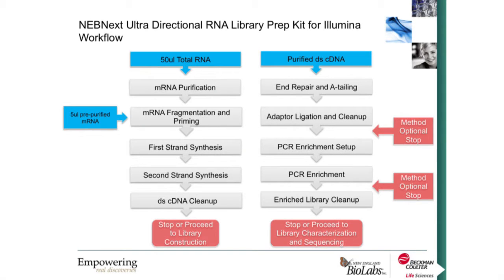This is a basic map of the workflow from an automation standpoint. The blue boxes indicate where your inputs are. On the left-hand side is the cDNA synthesis workflow, starting with either 50 microliters of total RNA going through mRNA purification using the poly-enrichment module from NEB, or 5 microliters of pre-purified mRNA or ribo-depleted RNA proceeding directly into mRNA fragmentation and priming. We then go through first and second-strand synthesis and double-stranded cDNA cleanup. A user can stop here or continue into the library construction workflow, starting with purified double-stranded cDNA, end repair and A-tailing in a single step, adapter ligation cleanup, optional PCR enrichment, and final library cleanup for characterization and sequencing.